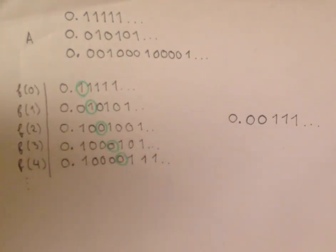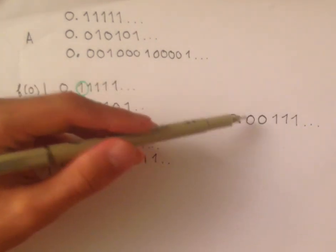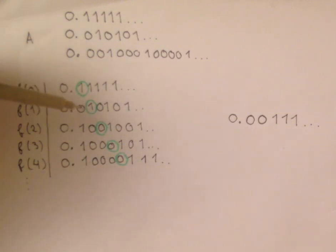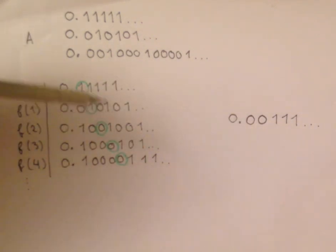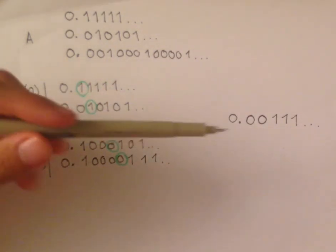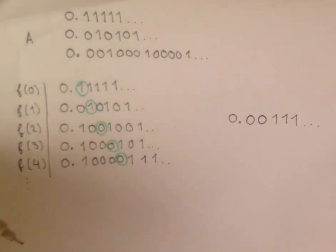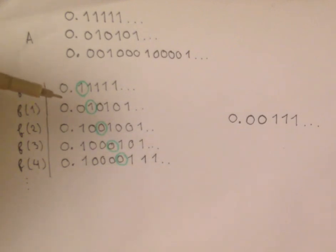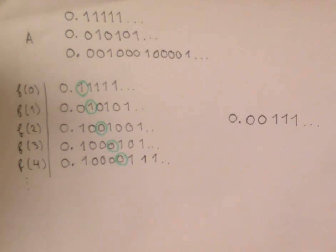This number that we constructed can't be the first number, because it has a 0 as its first digit after the decimal, whereas the first number has a 1. It can't be the second number because the second digit after the decimal is a 1 and ours is a 0. As we go down the list, we see that we've constructed it to differ from each number on the list by at least one digit. Since this number can't be on the list, our assumption that we had listed all the numbers was wrong. This means that there are strictly more elements in A than there are in the natural numbers.